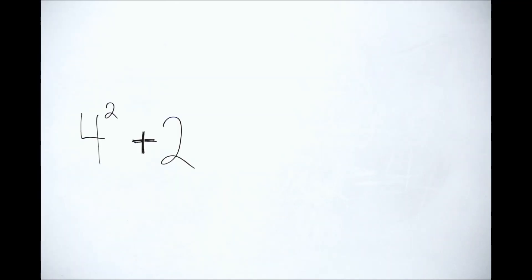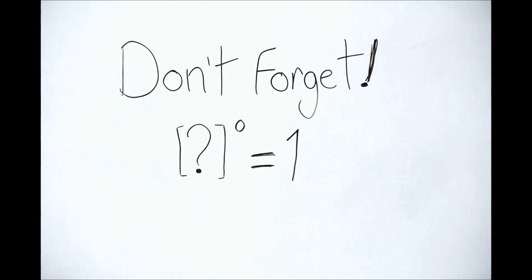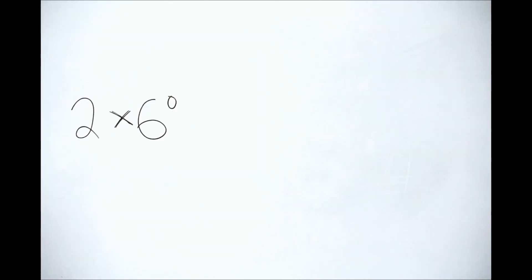4 squared plus 2 plus 6 is 24. And don't forget about the power of 0. 2 times 6 to the power of 0 times 4 to the power of 0 is 2.